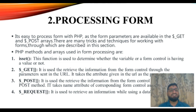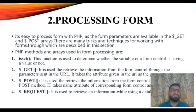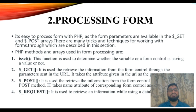The second one is the $_GET method. It is used to retrieve information from the form control through parameters sent in the URL. It takes the attributes given in the URL as values. So basically, the $_GET method takes the value through the URL and processes the values which the user gives through your forms.